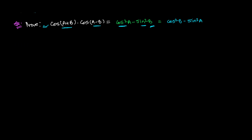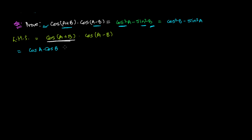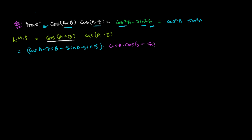So our left-hand side is cosine of (A+B) times cosine of (A-B). The formula for cos(A+B) is cosine A times cosine B minus sine A times sine B. When there is plus in the angle, we write minus between the terms, and when there is minus in the angle, we write plus.